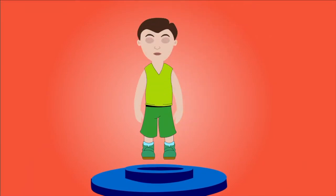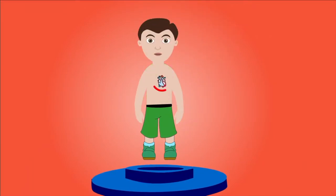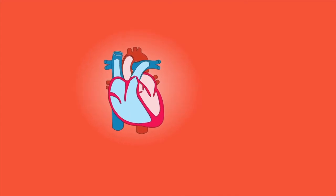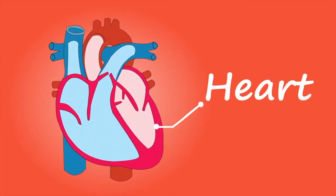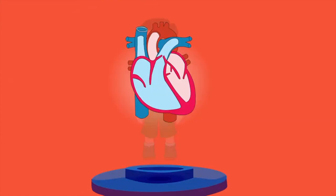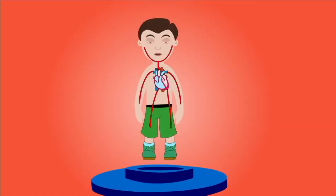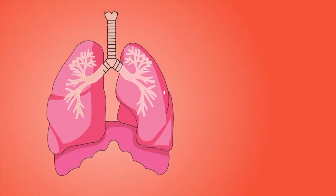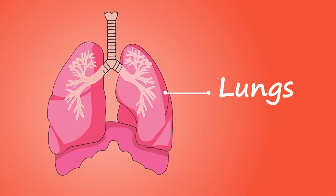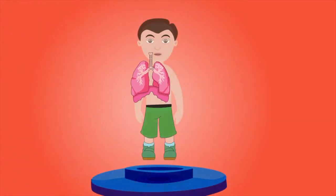Last lesson we talked about blood and how blood is everywhere in your body. It's pumped around by your heart to the tips of your fingers, to the tips of your toes, to the top of your head. But this week we're also going to talk about the lungs and how the lungs, combined with the heart, help us stay healthy.